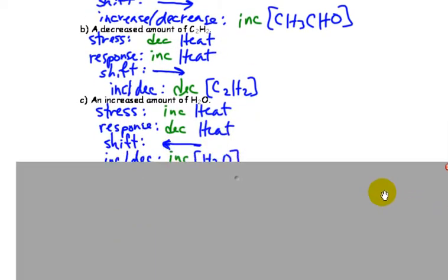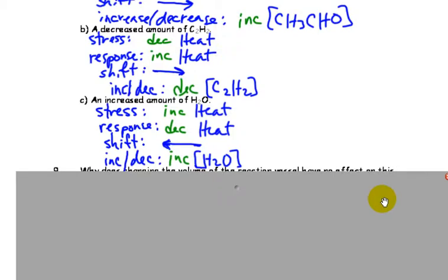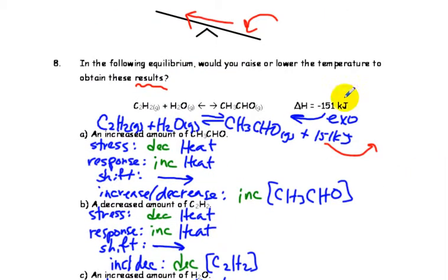Increasing heat would want to shift things to the left. So increase heat, we try to use it up, and as a result, everything on the left would increase, everything on the right would decrease. If I was to figure out what the KEQ value is, I'd get a smaller number because I have more reactants than products.